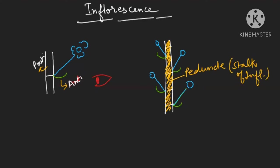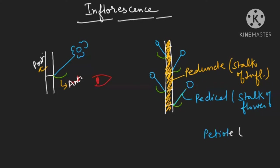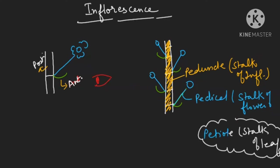And this is the pedicel. Pedicel is the stalk of the flower. Petiole was the stalk of the leaf — just remember this so you know when to use petiole, when to use pedicel, and where peduncle applies. So today our focus will be on inflorescence.